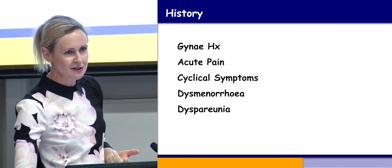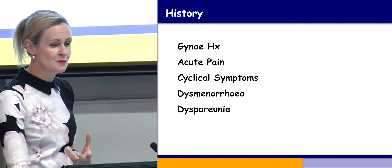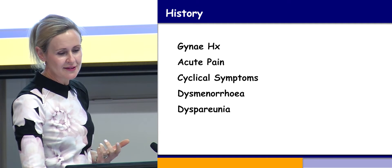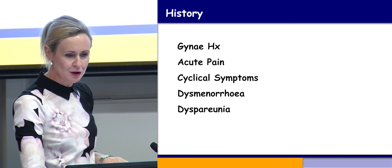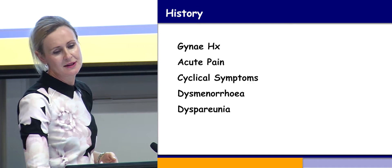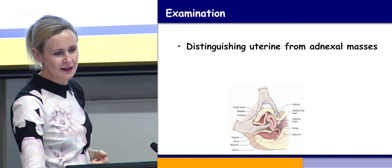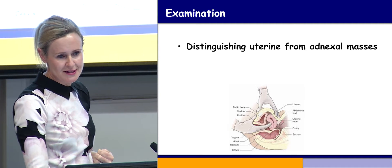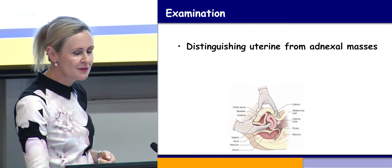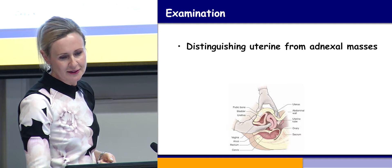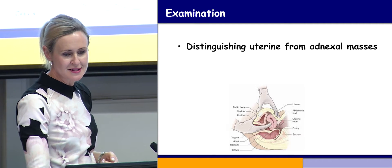When assessing a patient for a pelvic mass, the most important thing first is the history. It's important to take history including whether the pain is chronic or acute, whether they get cyclical symptoms, dysmenorrhea, or dyspareunia. It's also very important to examine these patients, which can sometimes be challenging in our population because of some very large BMIs. Doing a bimanual examination is an important part of the assessment.